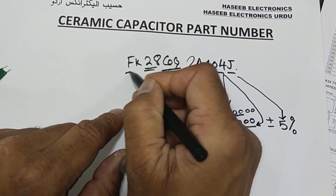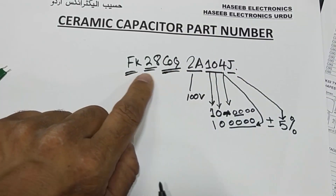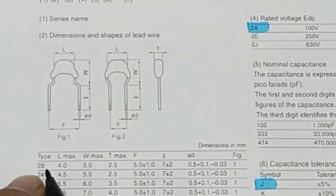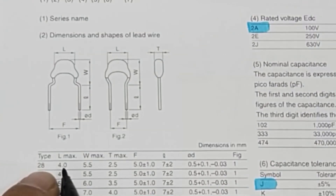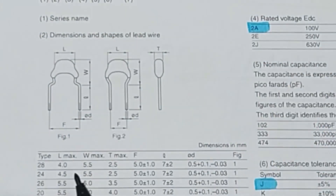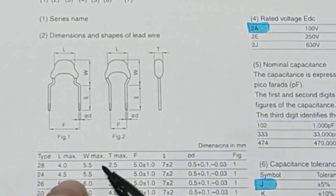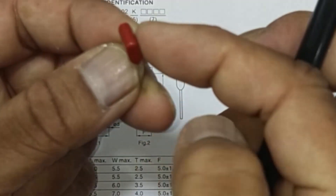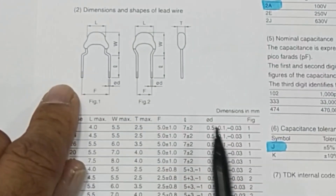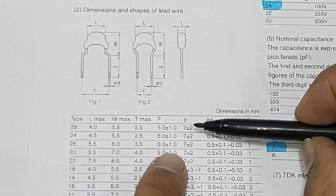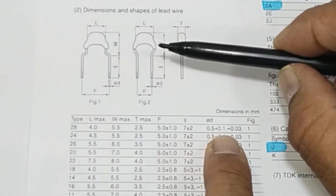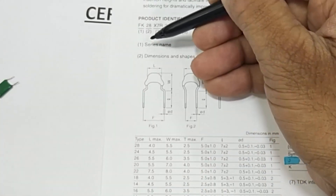Going back to the full part number: FK is the series name, and 28 encodes the dimensions. If the dimension code is 28, then: length is 4 mm, width is 5.5 mm, height/body thickness is 2.5 mm, gap between the two leads is 5 mm, lead length is 7 mm, and lead diameter is 0.5 ± 0.1 mm. All this physical information is encoded in that second two-digit code.